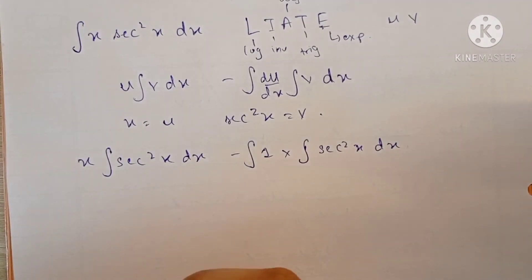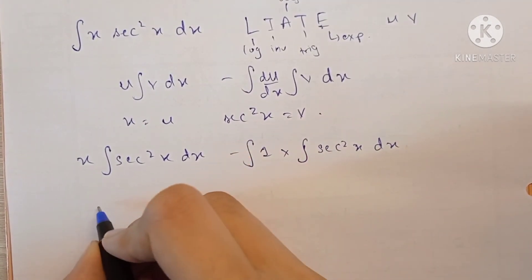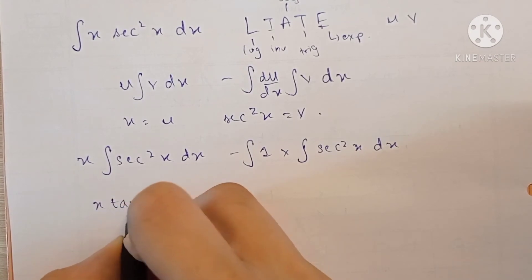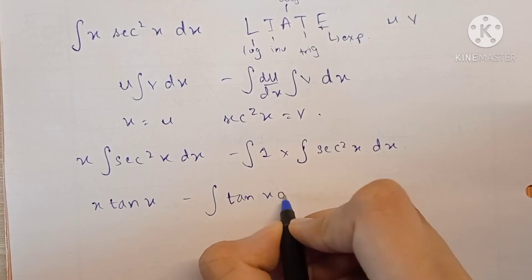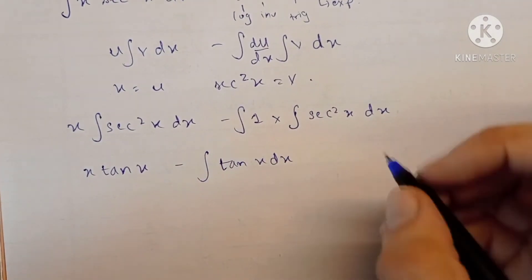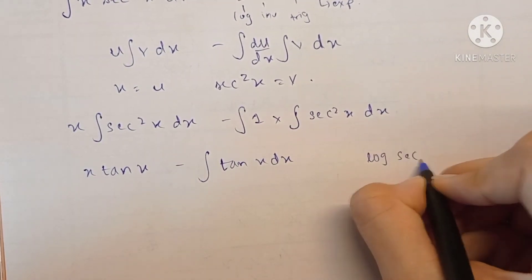We know that the integration of sec squared x is tan x. So this becomes x tan x minus the integration of tan x.